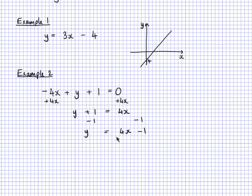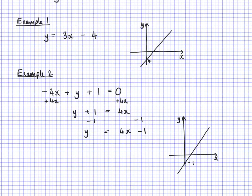Now I have the equation in the form y = mx + c again. The gradient is 4 and the y-intercept is negative 1. So if I sketch this, I know it will cross at negative 1 and the gradient is 4, which is positive, so it would go like this. It's similar to the first example but crosses at negative 1, and it should be a bit steeper because this has a gradient of 4 and the first one had a gradient of 3.